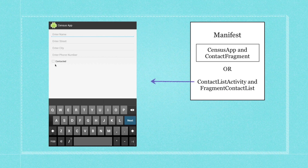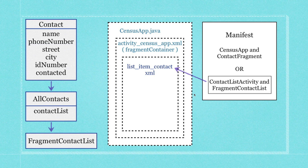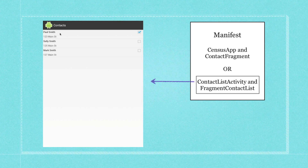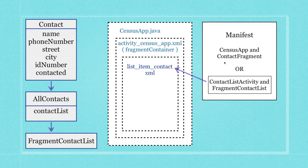This is what we had previously. Now we're going to add `contacted`. What we want to do this time is create ContactListActivity, which is going to have all our contacts. ContactListActivity is going to take the place of CensusApp, and we're also going to be making changes to the manifest. We're going to edit Contact, create AllContacts to store contacts in an array list, and create FragmentContactList, which feeds all contacts into list_item_contact — an XML file.